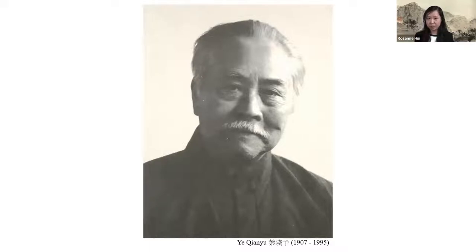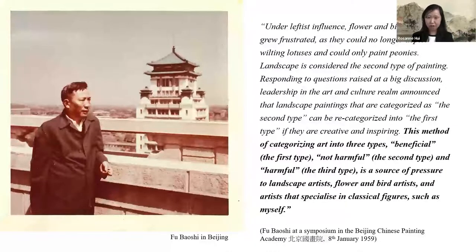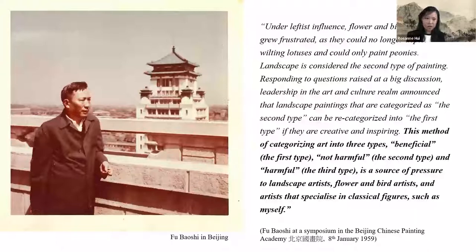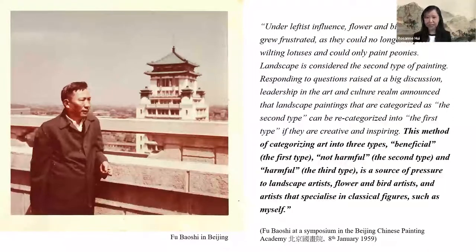Ye's comments highlighted the difficulty in documenting reality while balancing aesthetic quality. Fu Baoshi recognized this problem and proposed a solution: 'Making art is not like making a documentary. We must work hard to elevate documentaries into works of art.' Speaking at a symposium at the Beijing Chinese Painting Academy in 1959, he said that under leftist influence, flower and bird painters were frustrated as they could no longer depict wilting lotuses and could only paint peonies. He went further to say that categorizing art into beneficial, not harmful, and harmful types was a source of pressure to landscape and classical figure artists.